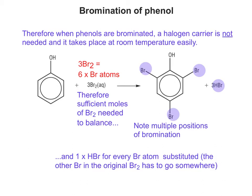Not forgetting that 3Br2 actually means six bromine atoms available. So if you use three of them to substitute onto the benzene ring, you need to use the other three when producing the HBr afterwards.